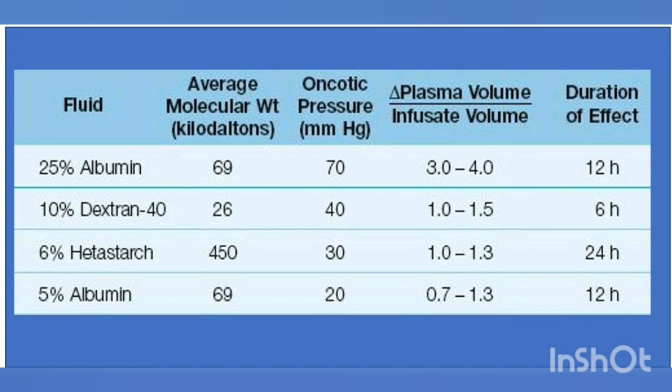Albumin solutions are heat-treated preparations of human serum albumin, available as a 5% solution and a 25% solution in 0.9% sodium chloride. The 5% albumin solution is usually given in aliquots of 250 ml, and its colloid osmotic pressure is 20 mmHg. The plasma volume increment averages 100% of the infused volume.